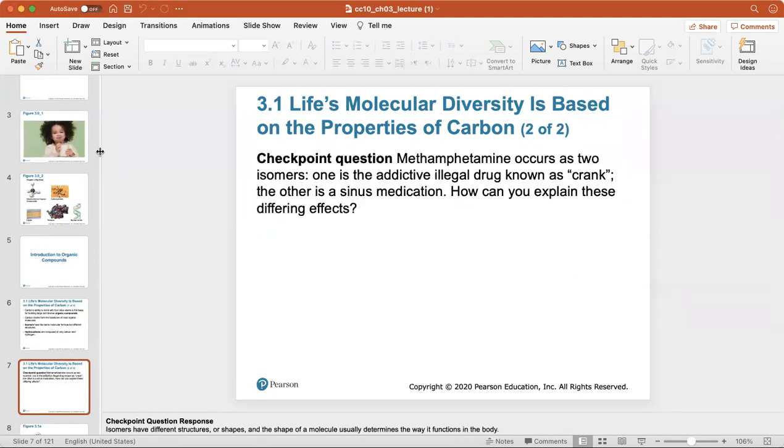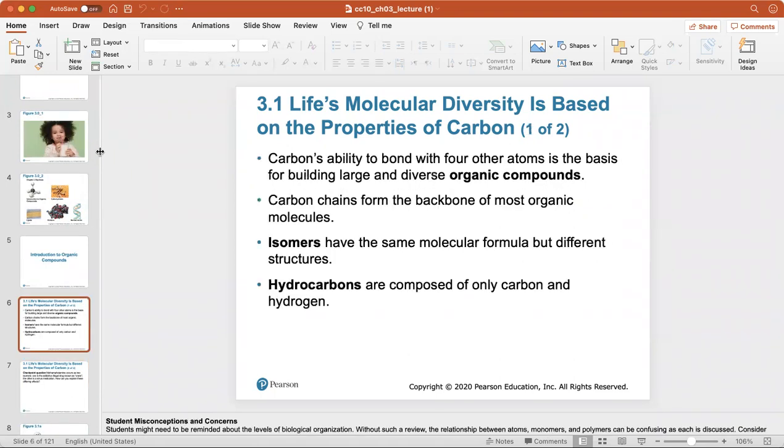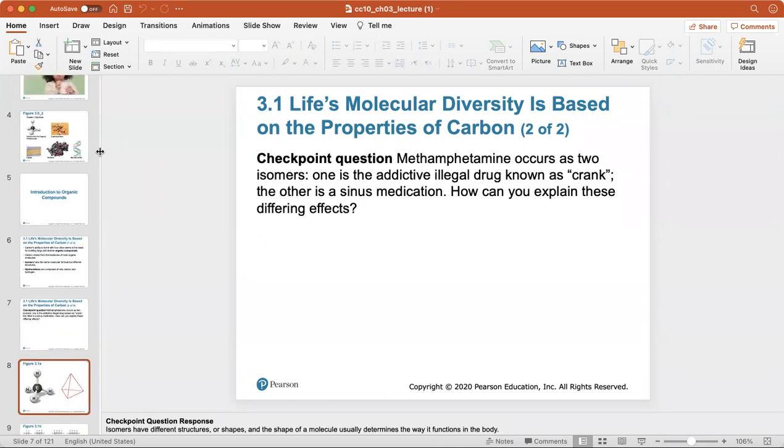As a checkpoint question, methamphetamine occurs as two isomers. One is the addictive illegal drug known as crank or meth, and the other is a sinus medication. How can you explain these differing effects? That's because they are isomers, so they have the same molecular formula, meaning they have the same number of atoms, but their atoms are arranged differently.